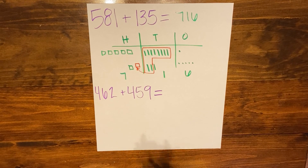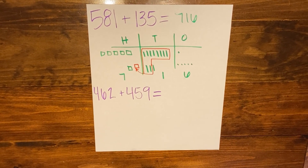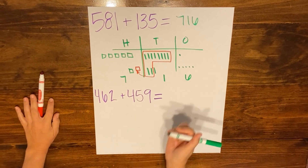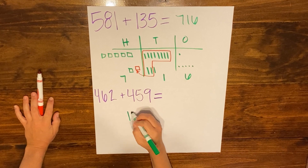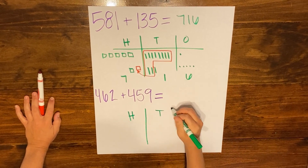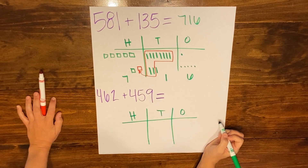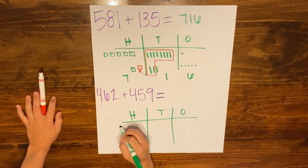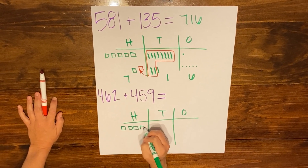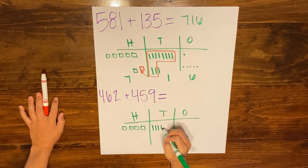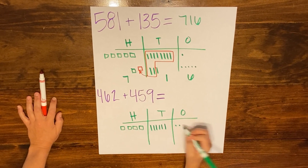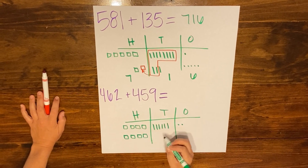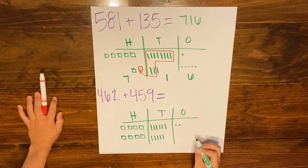Now we're going to look at our last example: 462 plus 459, again using the strategy of drawing base 10 blocks. I'll draw my place value chart and draw out both addends — four hundreds, six tens, and two ones for 462, and four hundreds, five tens, and nine ones for 459.